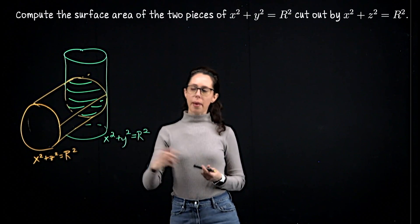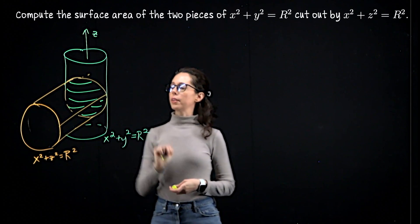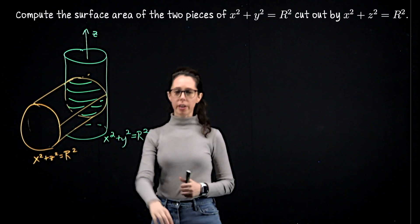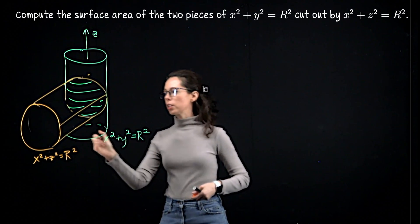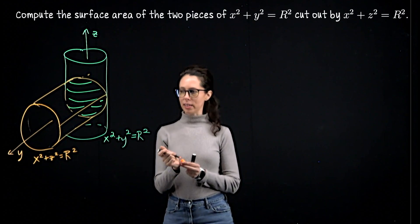This cylinder is symmetric about the z-axis, so you can imagine that there's the z-axis. This cylinder is symmetric about the y-axis, so actually the axis I'm going to imagine coming out of this cylinder is the y-axis.